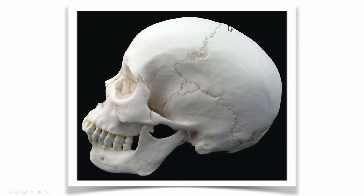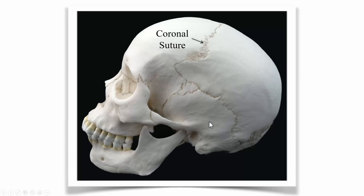Let's take a look at the sutures of the skull — the places where skull bones come together. They're called sutures because they look like they are stitched or sutured together, and we have specific names for them. The coronal suture divides the front from the back of the calvaria, since a coronal section divides an object into a front and a back.